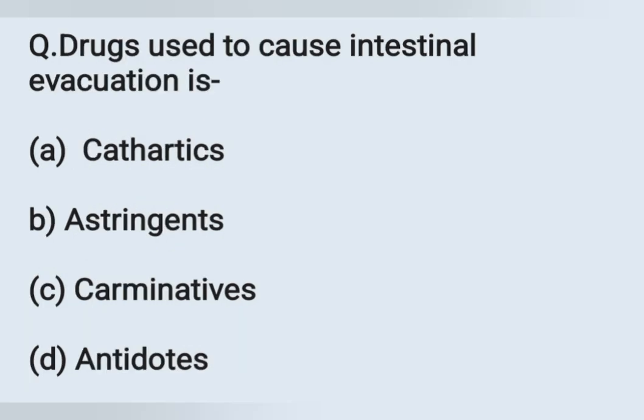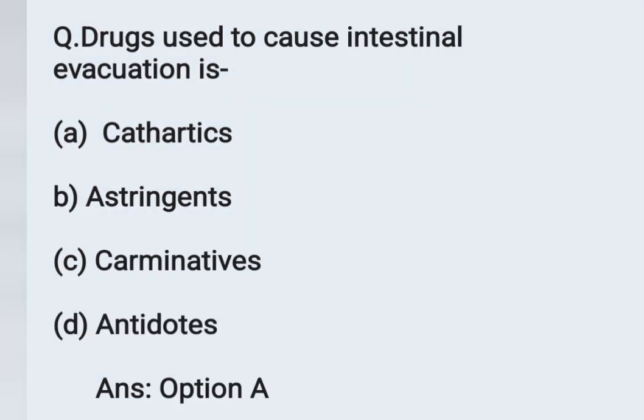The next question: drugs used to cause intestinal evacuation are known as. Options: A - cathartics, B - astringents, C - carminatives, D - antidotes. The drugs used for intestinal evacuation are cathartics. Option A is the correct answer. In the previous question, purgatives appeared in option C — that is also a drug used for intestinal evacuation. Purgatives come under the category of cathartics.